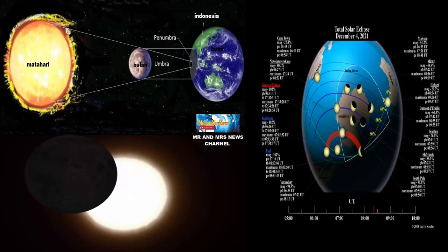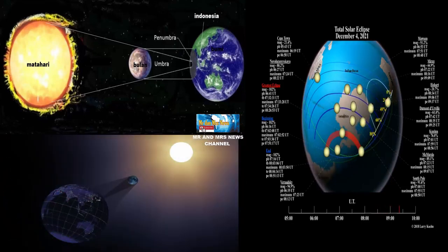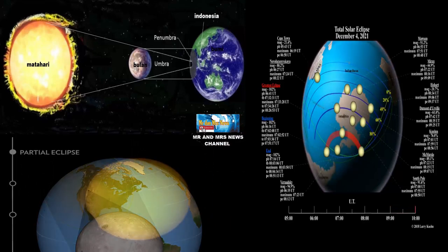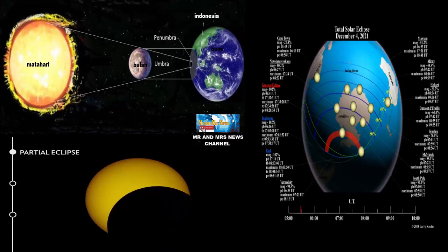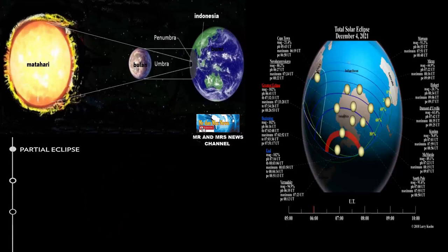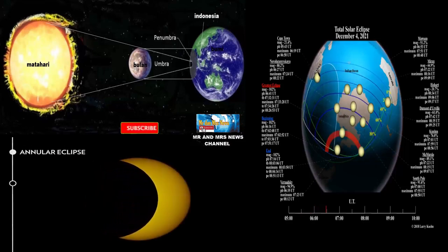Saat Gerhana ini terjadi, diameter matahari 864,000 mil sepenuhnya 400 kali lebih besar dari satelit bumi bulan yang hanya berukuran sekitar 2160 mil. Akan tetapi, bulan juga kebetulan akan berada di sekitar 400 kali lebih dekat ke bumi daripada matahari. Rasiunya bervariasi karena kedua orbit ellipse.